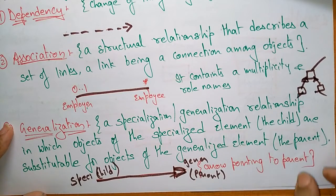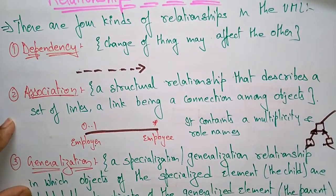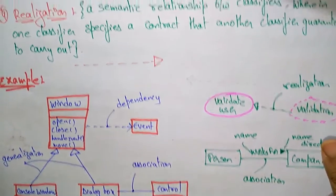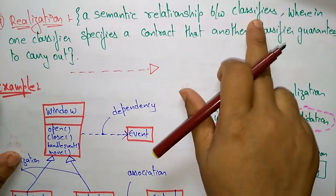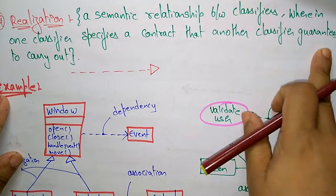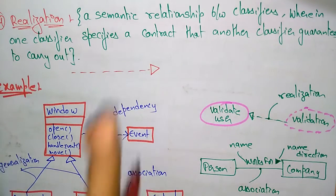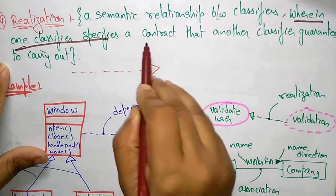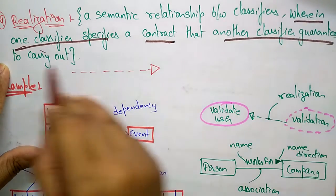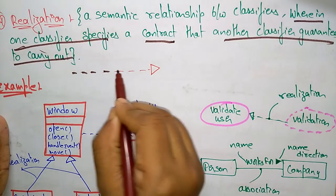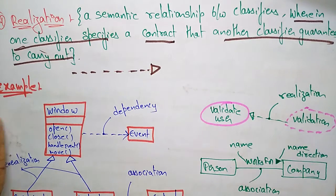The fourth relationship is realization. Realization means a semantic relationship between classifiers where one classifier specifies a contract that another classifier guarantees to carry out. The symbol for realization is a dotted line with a generalization-style arrowhead.